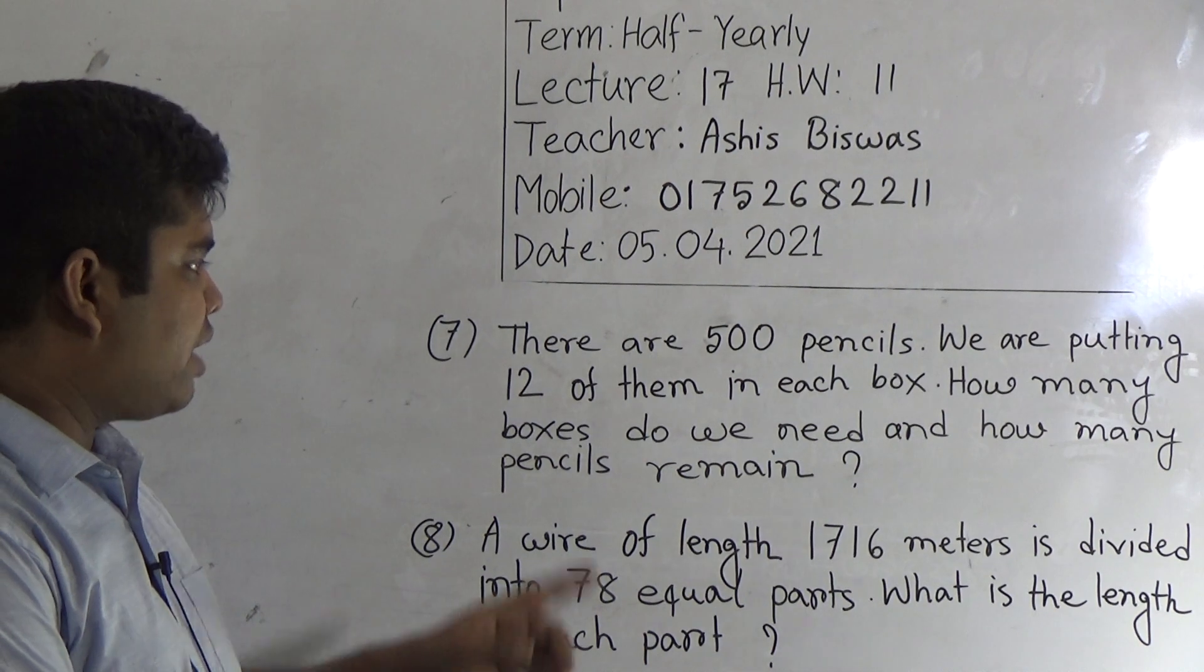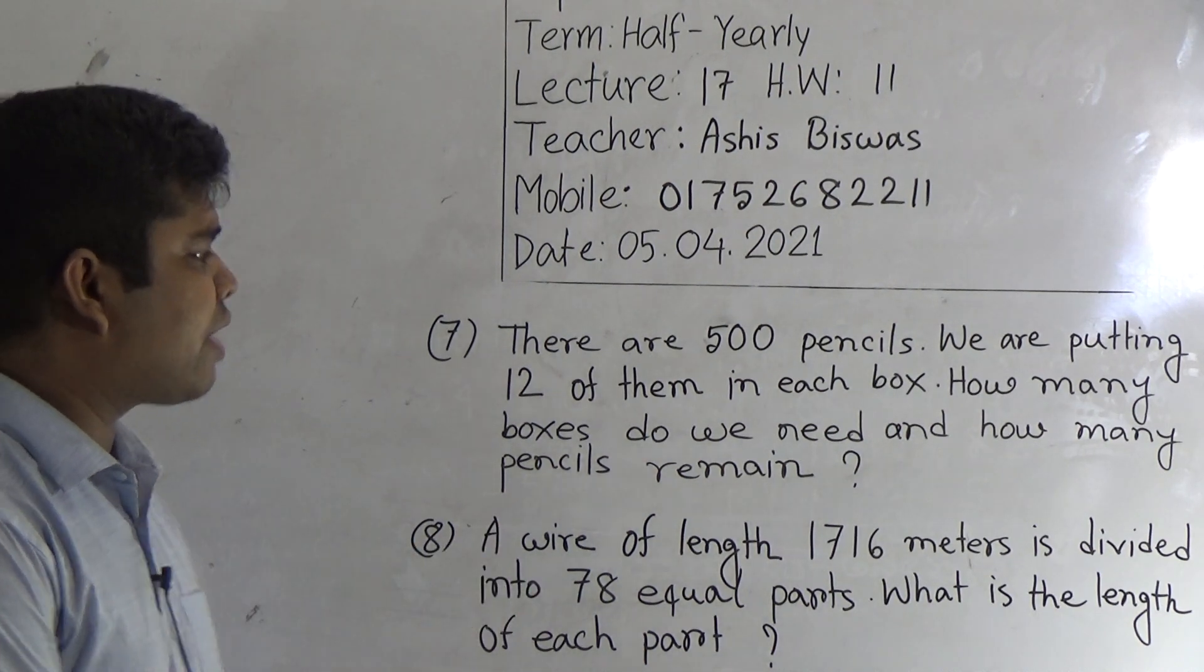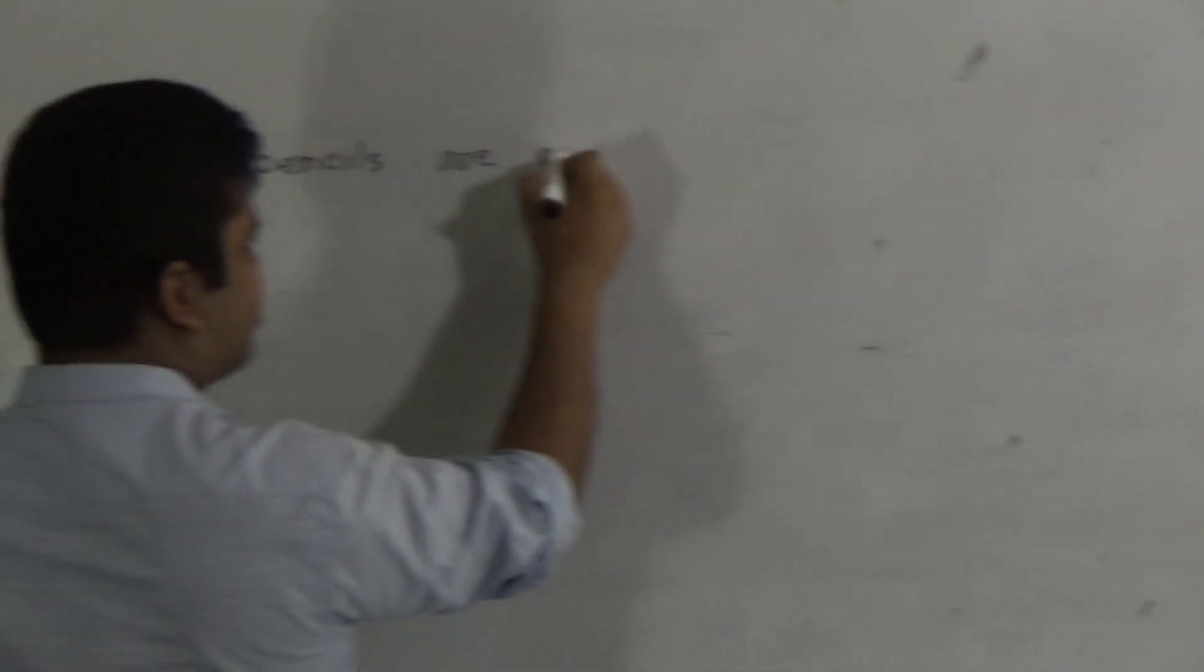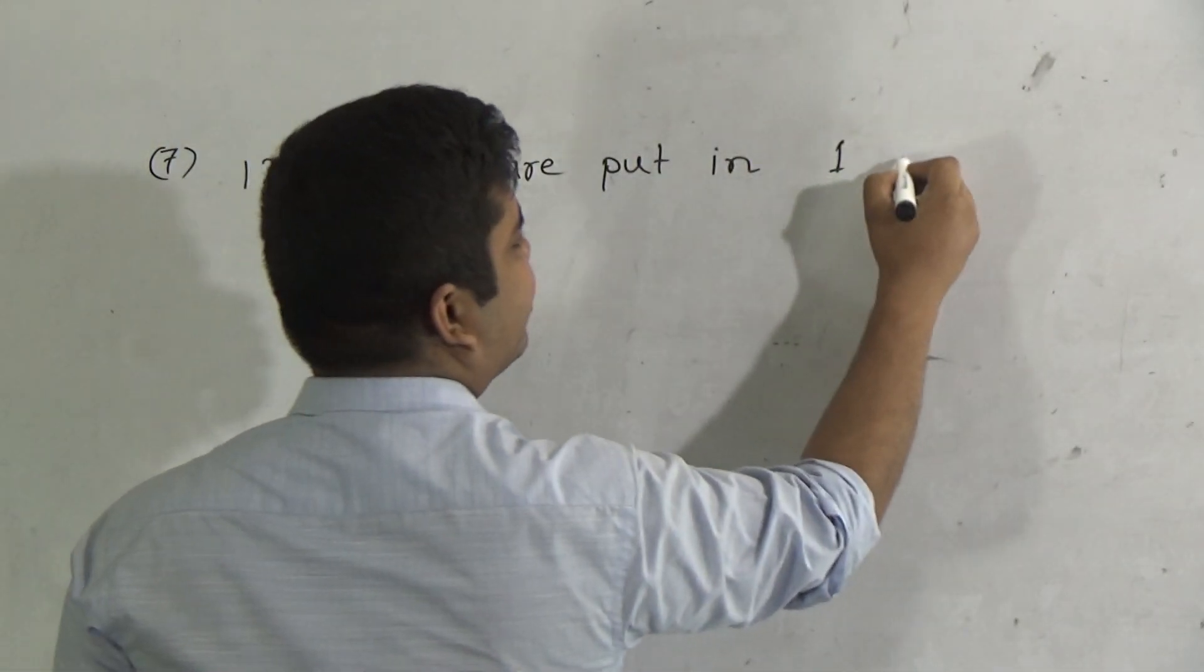Therefore, in how many box? So 7 number. At first we write 12 pencils. 12 pencils are put in one box. Each box means one box.